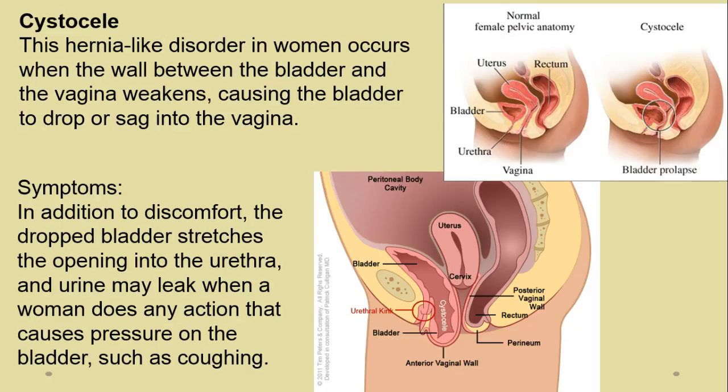Cystocele — pronounced 'sisto-seel' — is a hernia-like disorder where there is a protrusion of the wall between the bladder and the vagina. You can see in the diagram the bladder prolapsing into the vagina. This creates a case where incontinence or leakage of urine occurs, especially when there's any kind of pressure on the pelvic floor.